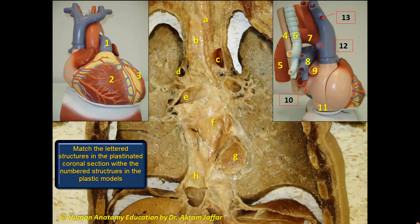In this question, we are asked to match the lettered structures in the plastinated coronal section of the thorax with the numbered structures in the plastic models. Each numbered structure may be used once or not at all. Let's look at the first lettered structure, A. A is the esophagus. This is at the superior mediastinum. The esophagus is the most posterior structure, and the trachea is just in front of it. The esophagus here matches number 4 in the plastic model.